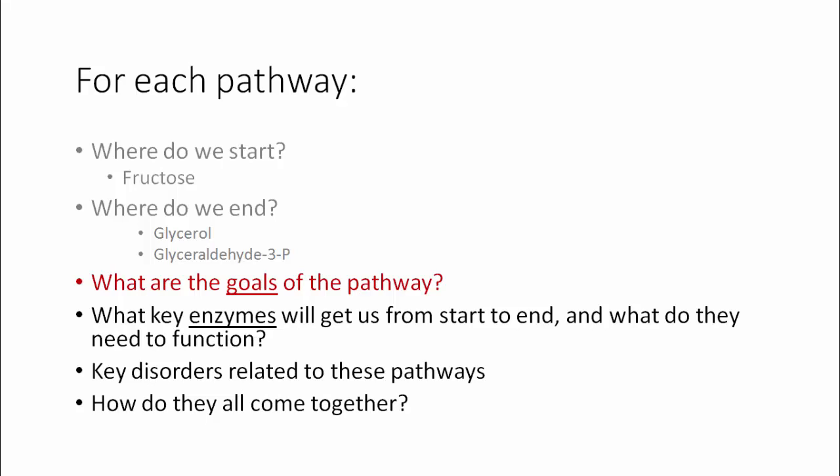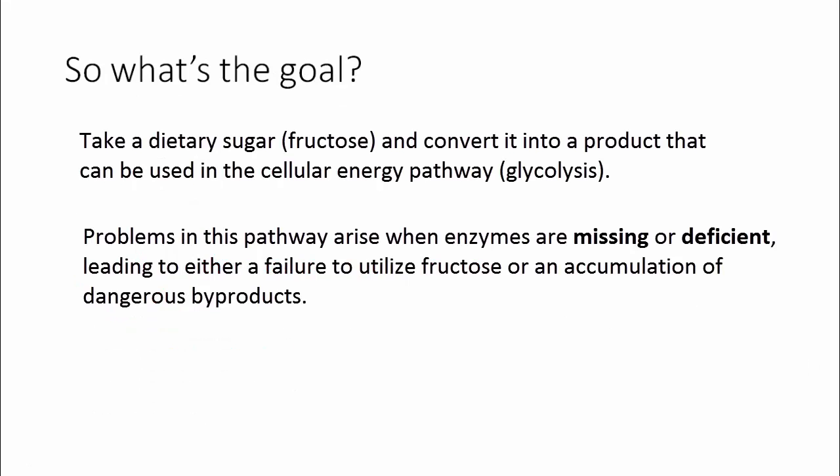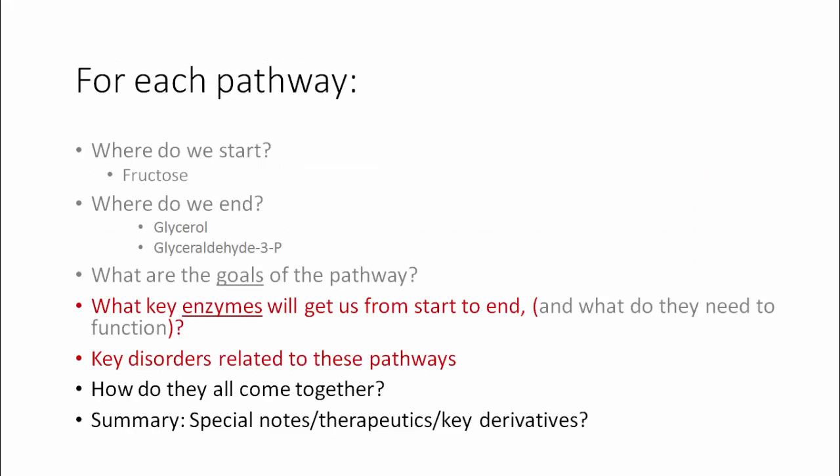We've highlighted where the pathway starts with fructose and where we end, namely with glyceraldehyde-3-phosphate or the byproduct glycerol. The overall goal of this pathway is to take a dietary sugar, fructose, and convert it into a product usable in the cellular energy pathway, namely glycolysis. Problems in this pathway typically arise when enzymes are missing or deficient, leading either to a failure to utilize fructose or an accumulation of dangerous byproducts. Understanding the key enzymes will also help highlight the key disorders likely to show up on your Step 1 exam.